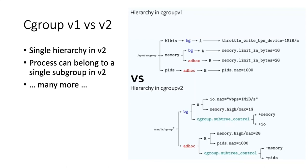In cgroup V2, things are more simplified and unified, which helps address most of the problems seen with V1. Some of the simplifications are: V2 only allows a single hierarchy, whereas in V1 each controller could have its own hierarchy, making the implementation more complex. Additionally, processes can only belong to a single subgroup in V2, whereas in V1 processes can be part of multiple subgroups. Overall, cgroup V2 aims to simplify and unify things in order to improve management of system resources.